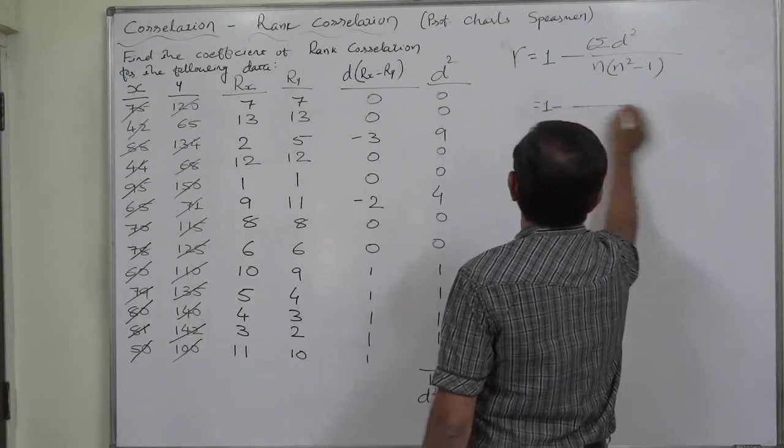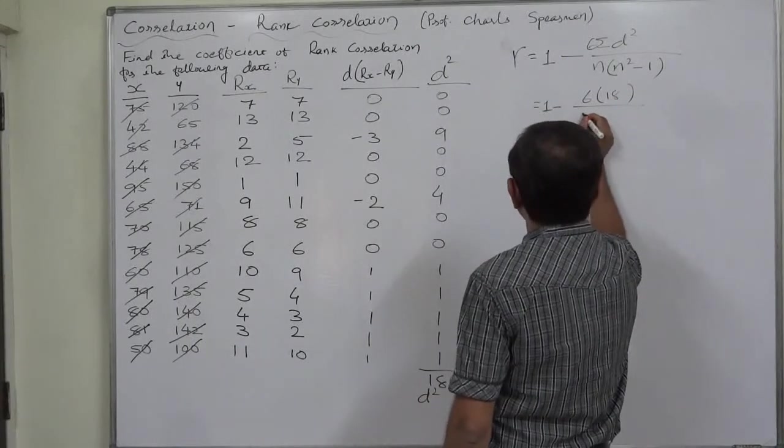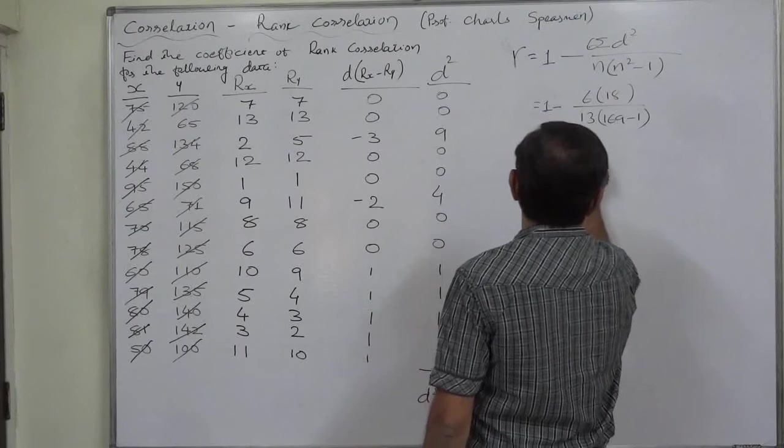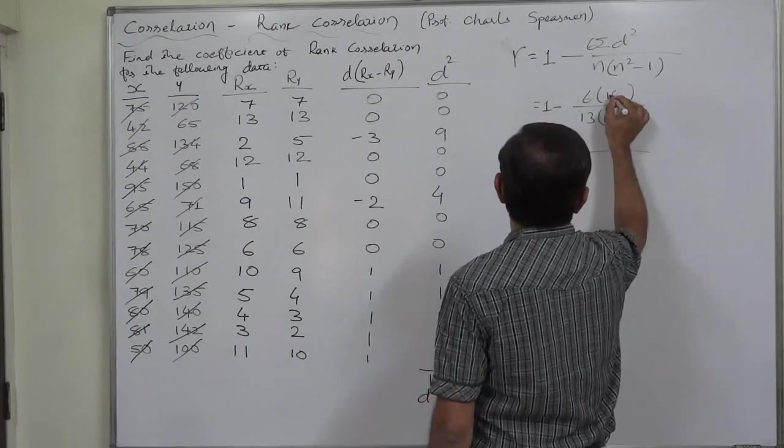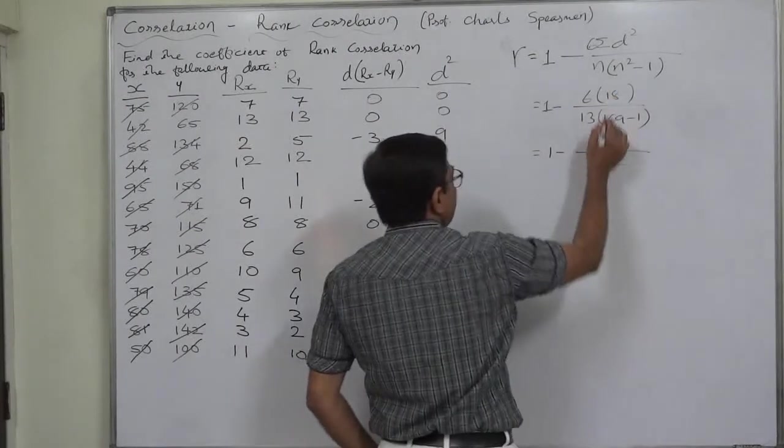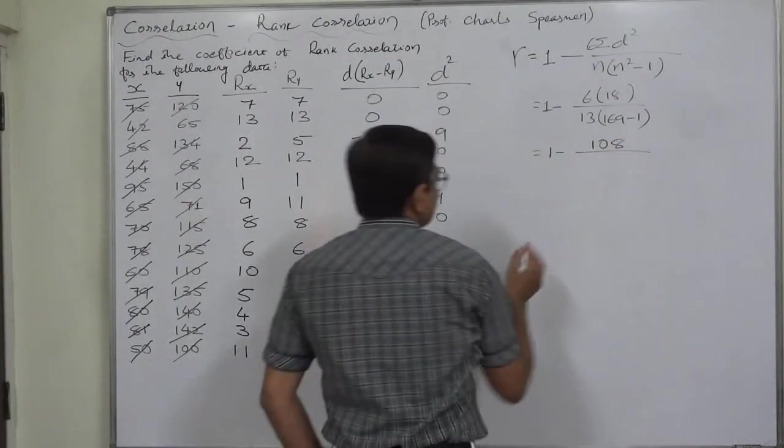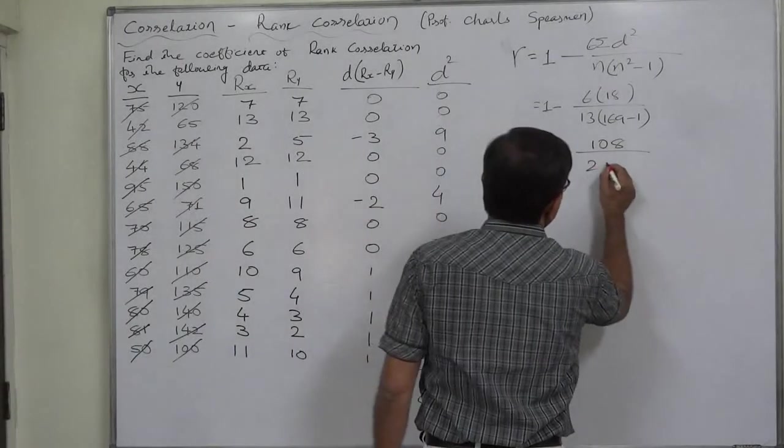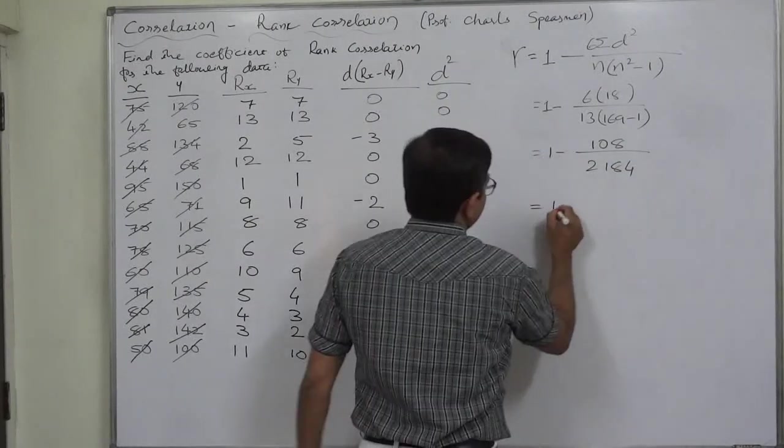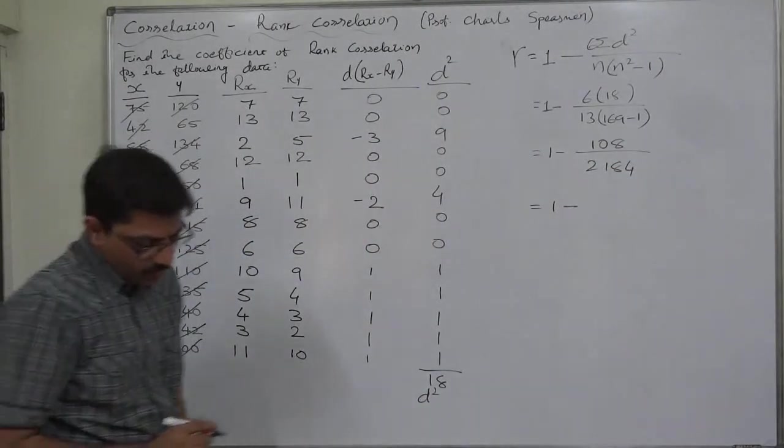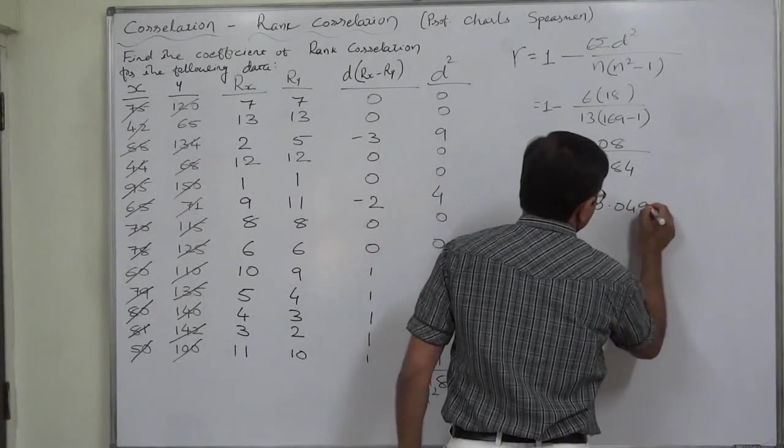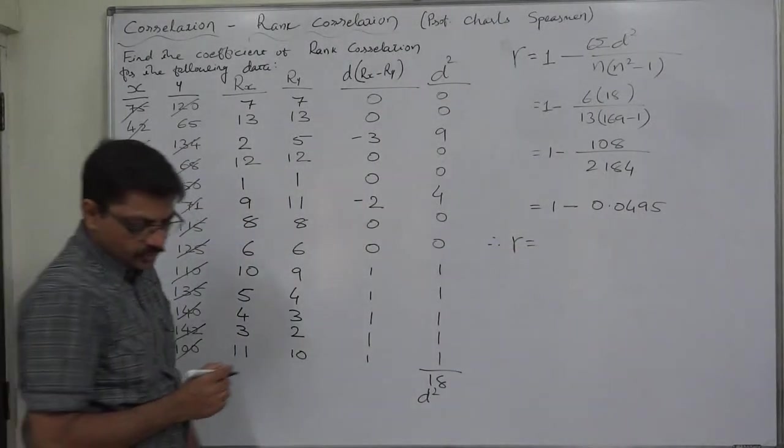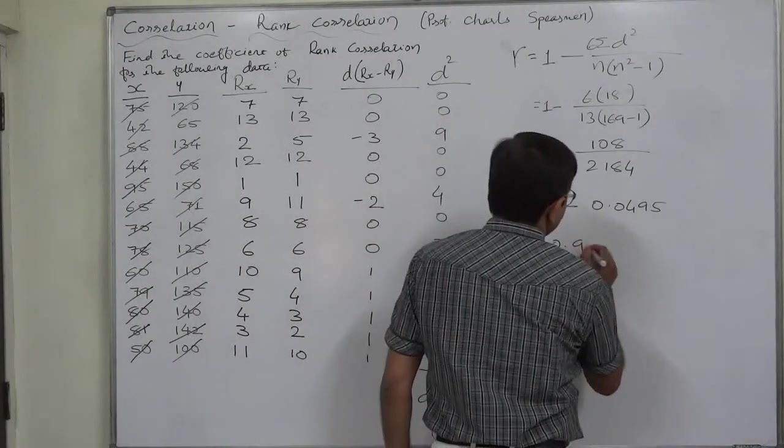So, it will be 1 minus 6 into 18 upon 13 into 13 square 169 minus 1. So, it is ultimately 1 minus 18, 6 are 108. 13 into 168. 13 into 168 comes to 2184. So, it is 1 minus 0.0495 approximate value. So, ultimately, the coefficient of rank correlation for this particular data comes to 0.9505.